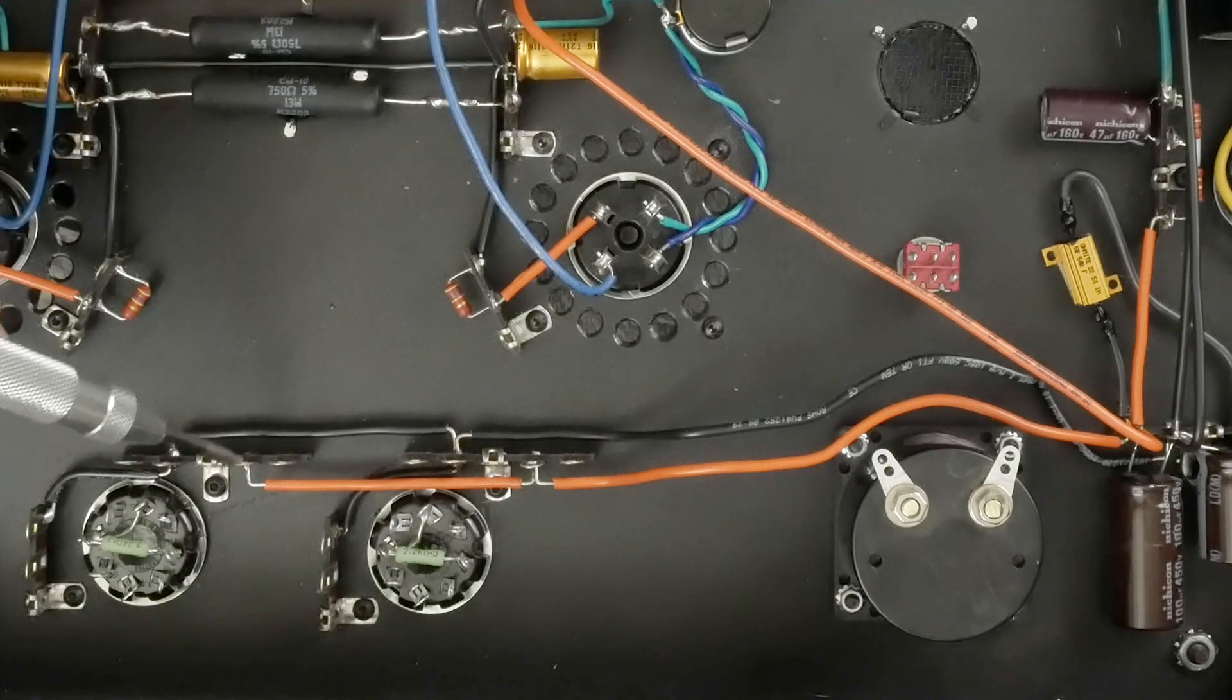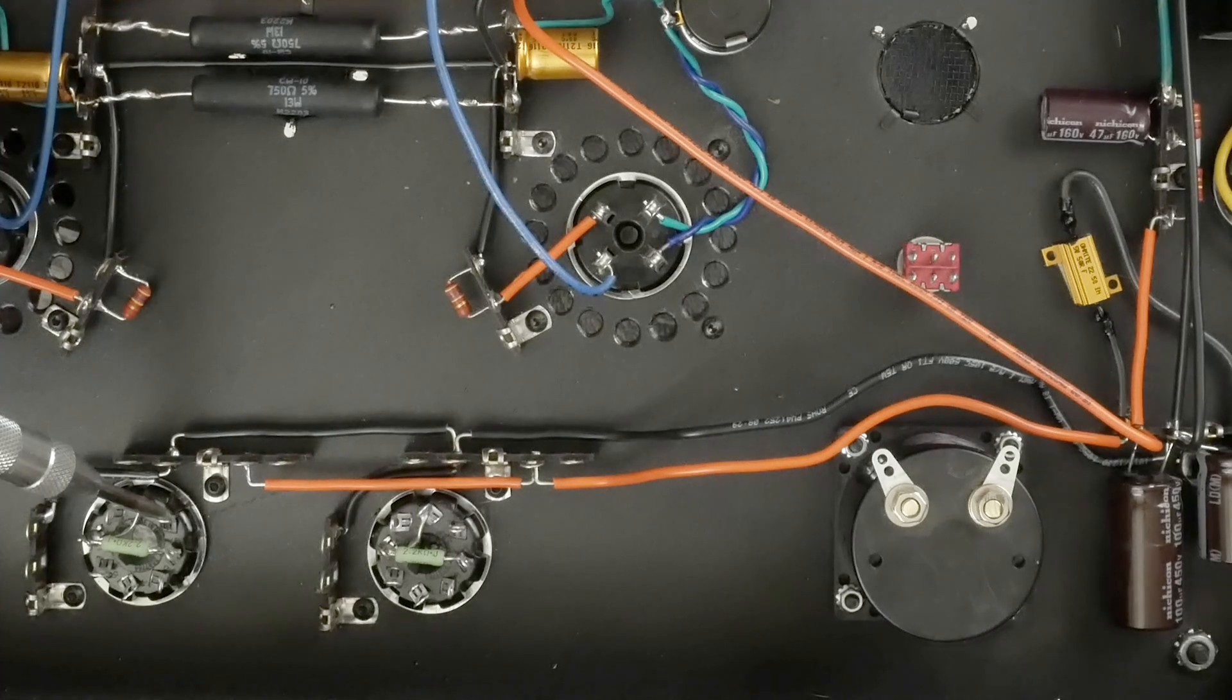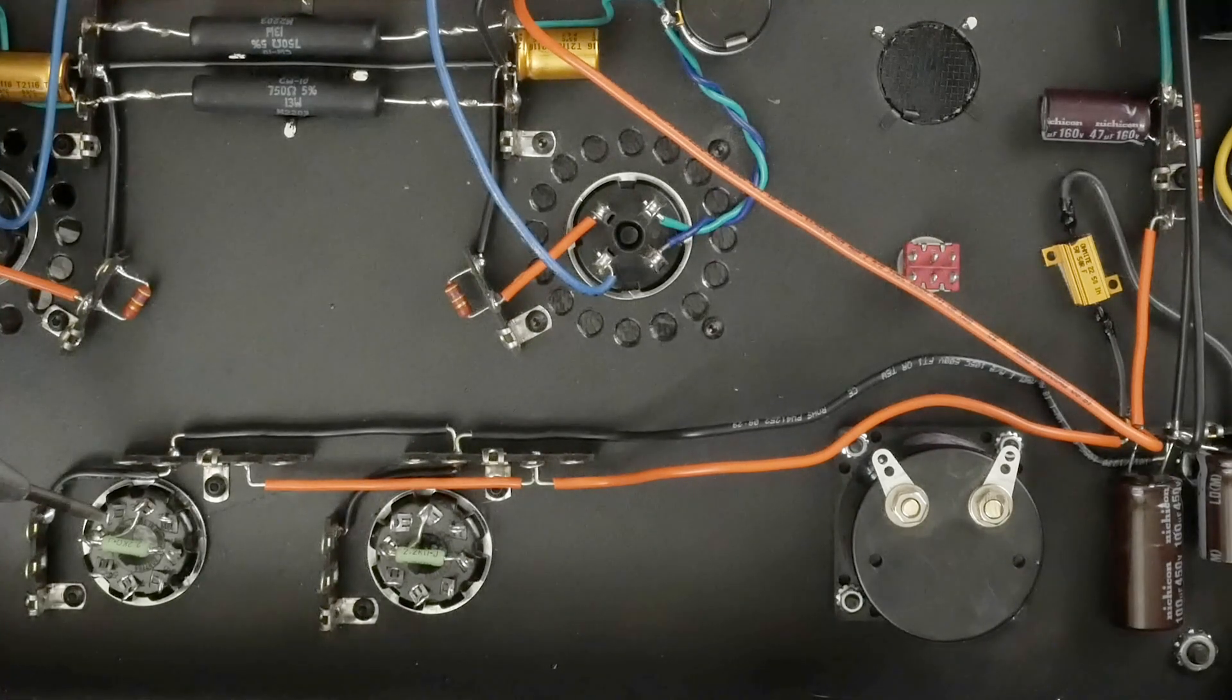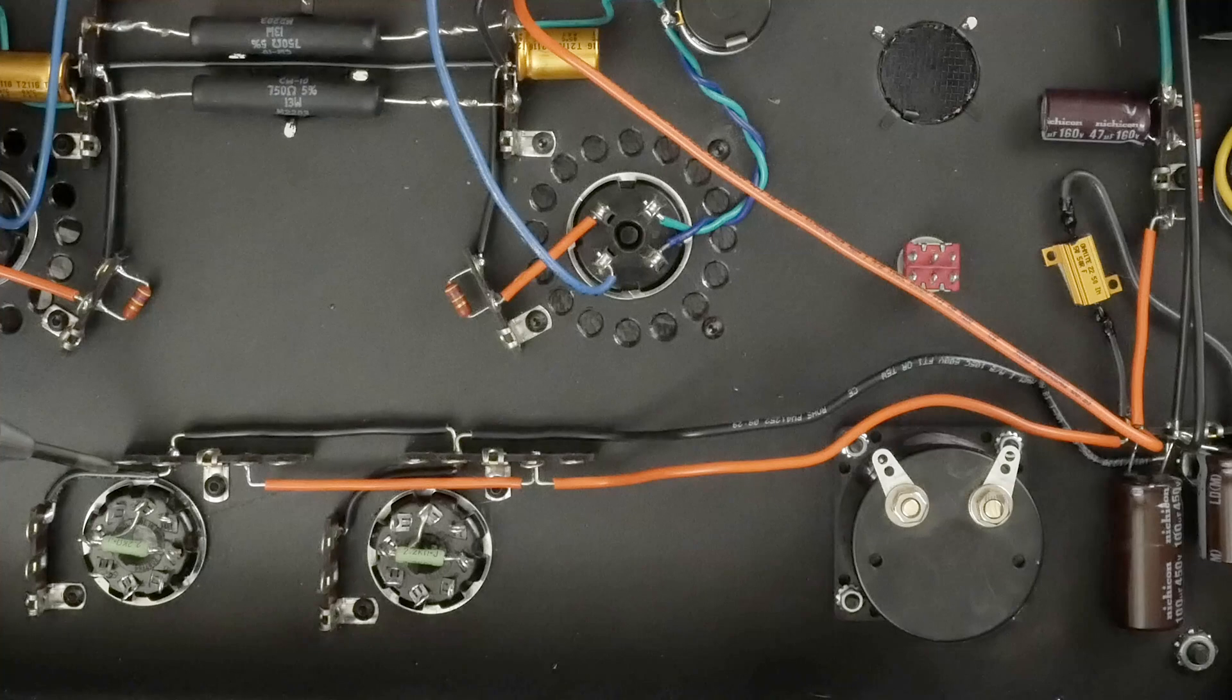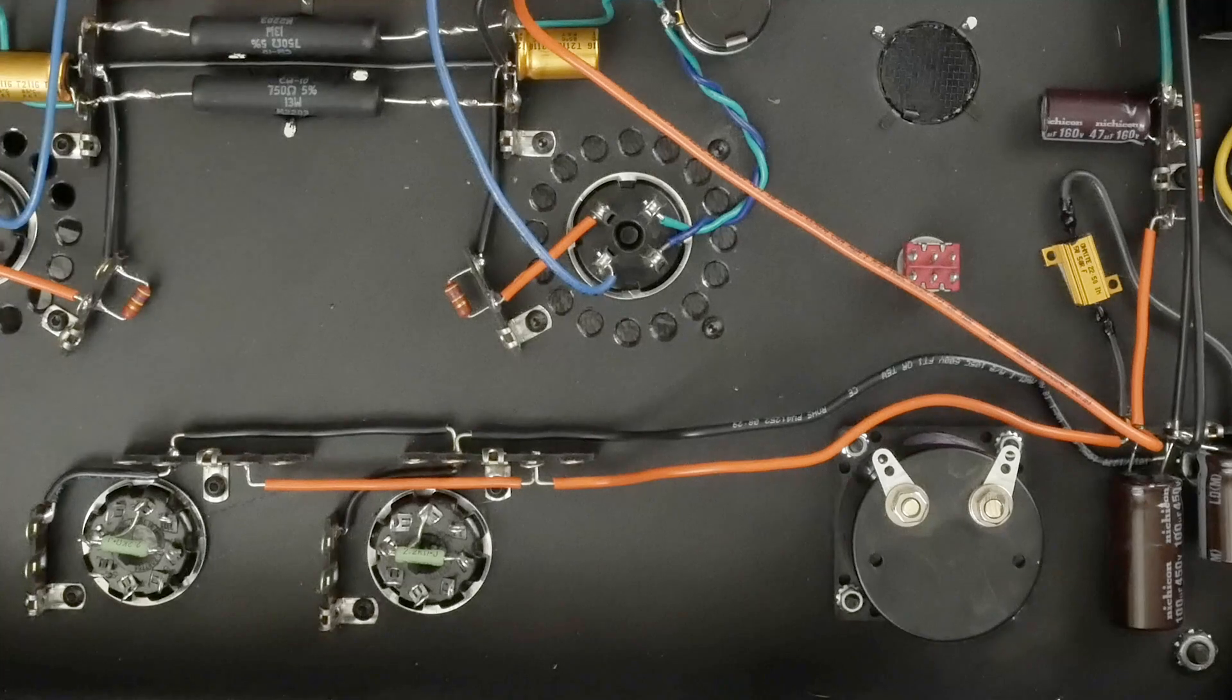We're going to have a resistor from this B+ terminal to the plate of the upper tube, then a filter cap from here to ground. On this side, the cathode connects here. Then we'll have the cathode resistor across these two terminals with a cap across that resistor. I set this up so we could potentially put a resistor and LED in series if we want to try that.